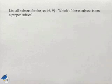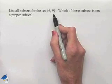Here's a problem where we will be dealing with listing of subsets. List all subsets for the set {6, 9}. Which of these subsets is not a proper subset? We begin by determining the number of subsets we're going to be working with.